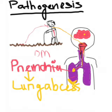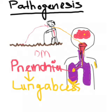Nocardia brasiliensis is a special type of Nocardia which causes skin infections. This disease mostly occurs in the United States, usually in tropical regions such as the southern regions.